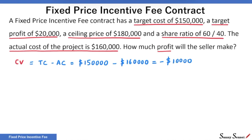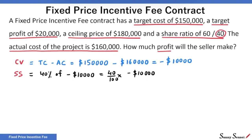Minus is definitely not good — it indicates a cost overrun. The seller has spent more than the target. The second term in the share ratio is 40%, meaning 40% of the cost variance is the seller's responsibility. Seller's share of risk in our example is 40% of minus $10,000, or minus $4,000.